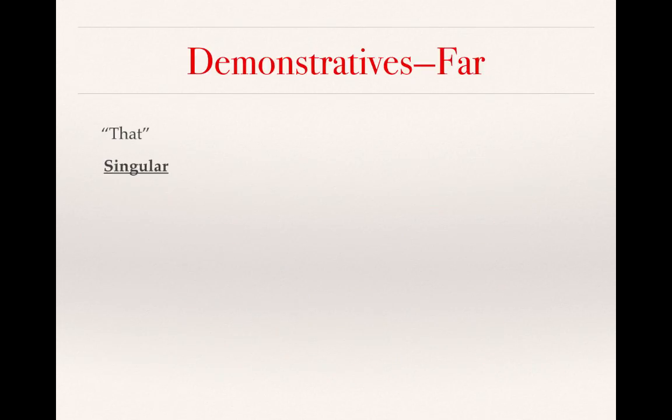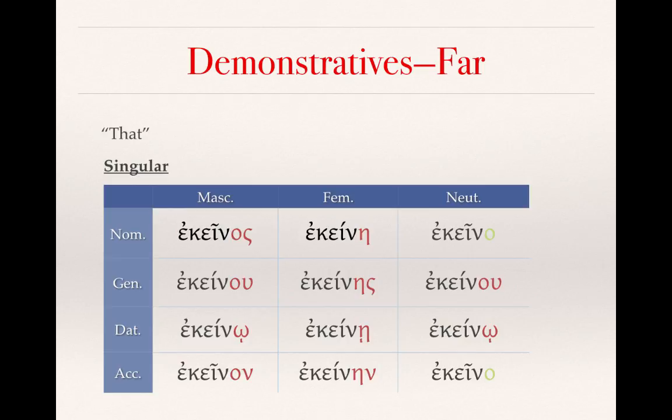Now let's talk about the far demonstratives, which we translate as that or those. In the singular, you'll notice very similar endings to what we've become accustomed to — ekeinos, ekeinē, ekeino. The pattern continues almost identically to what we've seen in adjectives and the definite article. We're missing the tau of the definite article, but those endings have been added on to the stem ekein-.